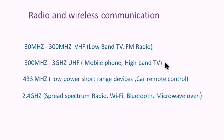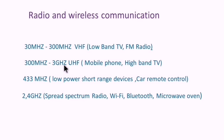Here are examples of some radio frequency bands in use. 30 MHz to 300 MHz is VHF, or very high frequency, utilized for low-band TV channels and FM radio. 300 MHz to 3 GHz is UHF, or ultra-high frequency — examples of use include mobile phones and high-band TV channels.